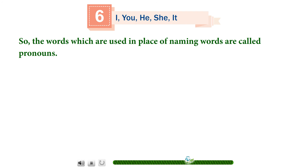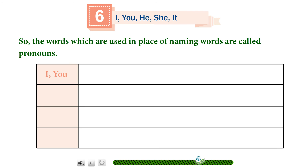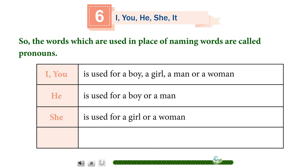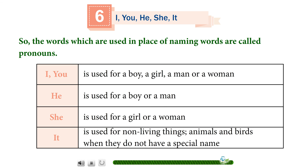The words which are used in place of naming words are called pronouns. 'You' is used for a boy, a girl, a man, or a woman. 'He' is used for a boy or a man. 'She' is used for a girl or a woman. 'It' is used for non-living things, animals, and birds when they do not have a special name.